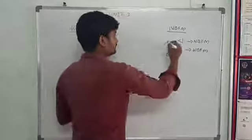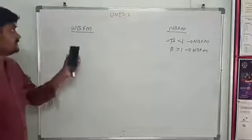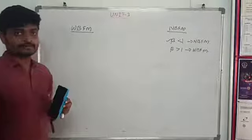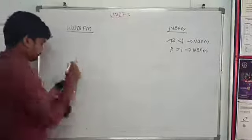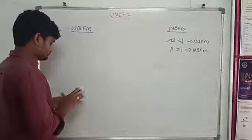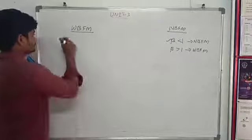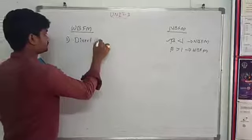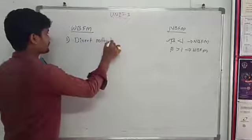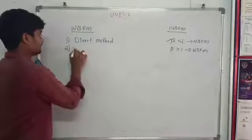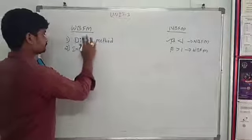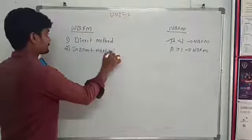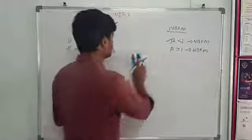Already last class we covered narrow band FM. Now here is the wide band FM. The wide band FM is generated by two methods: the first one is the direct method, and the second one is the indirect method.